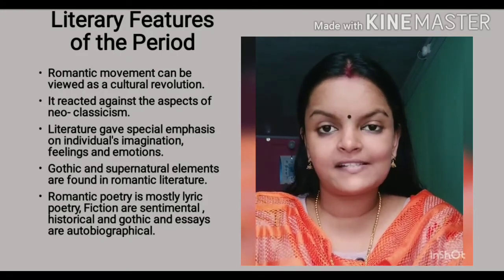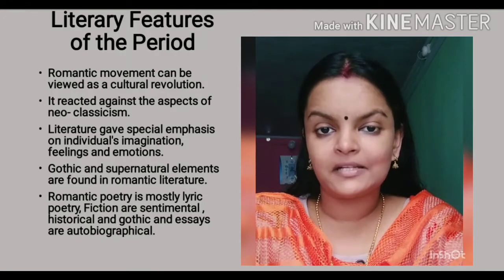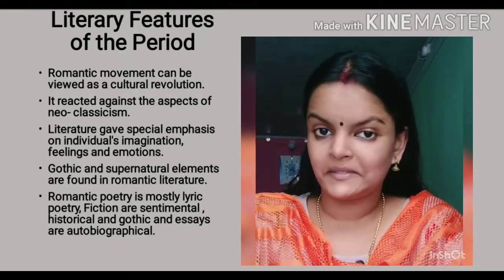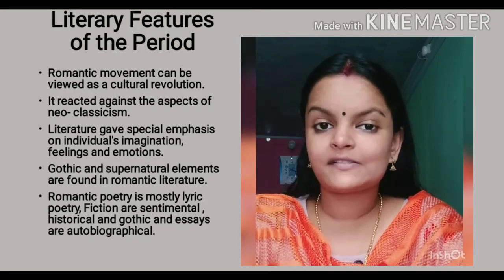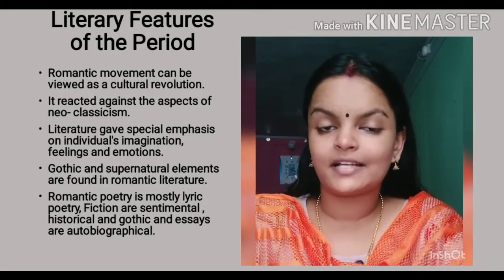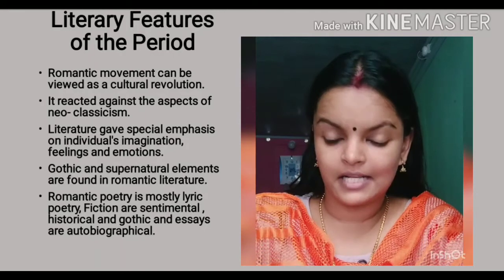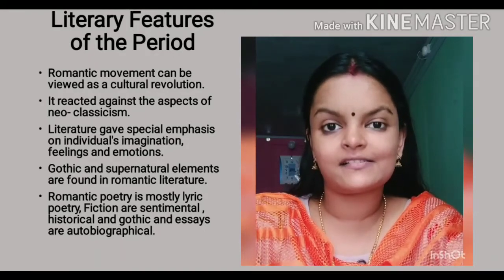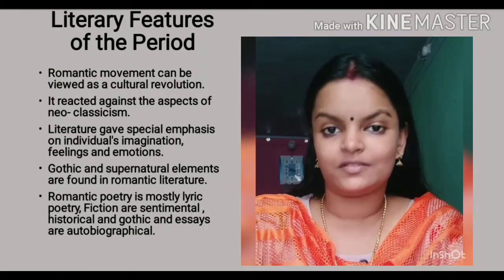We can see some kind of gothic and supernatural element in the writings of some Romantic period writers. For example, in Britain, writings of Samuel Taylor Coleridge show some supernatural elements, which later resulted in mysticism and also transcendentalism in literature.